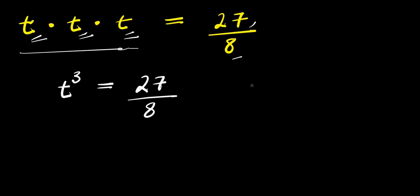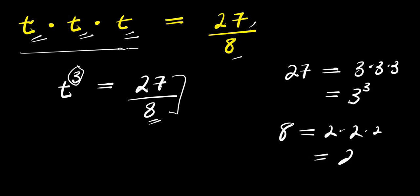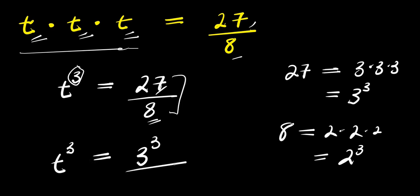The next step is to make sure every term has the same exponent. We can express 27 as 3 times 3 times 3, which is 3 to the power of 3, and 8 as 2 times 2 times 2, which is 2 to the power of 3. So we have t to the power of 3 equals 3 to the power of 3 divided by 2 to the power of 3.